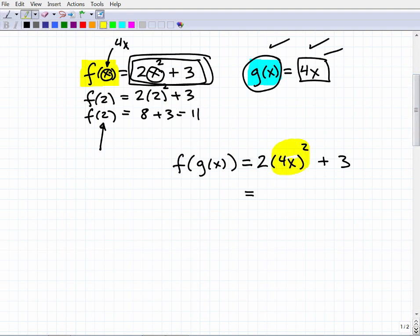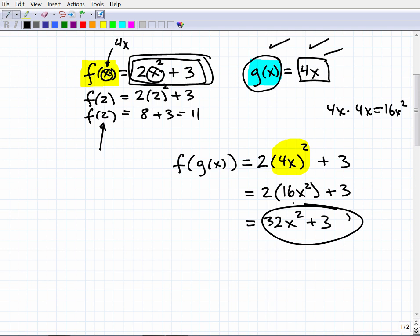So here I have to go ahead and do 4x squared, which is going to be, this is going to be 2 times what? What's 4x squared? So it's 4 times 4 is 16. Well, let's just do it over here, 4x times 4x is going to be 16x squared. So that's 16x squared plus 3, and then 2 times 16x squared gives me 32x squared plus 3. So that is our answer. That is f of g of x, our composite function.